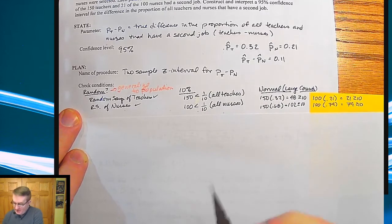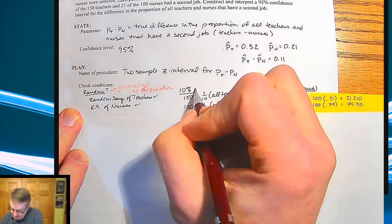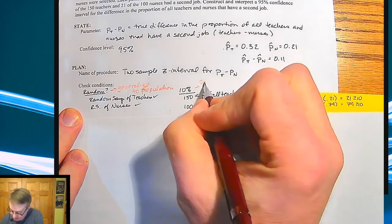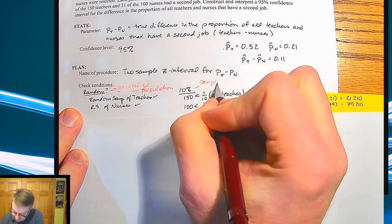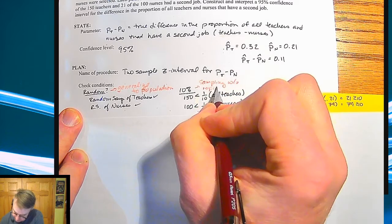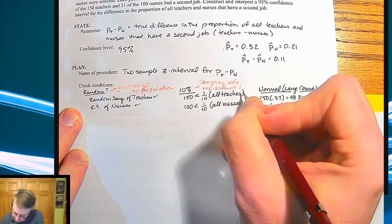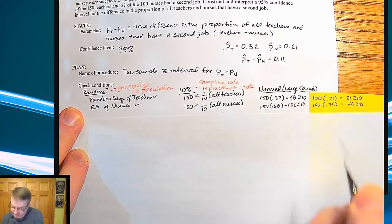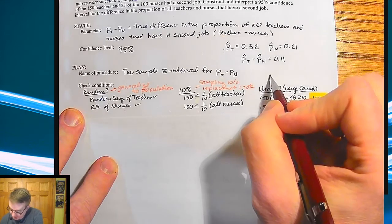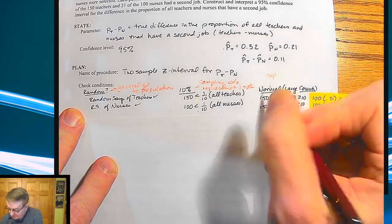What the 10% rule does is that means sampling without replacement is okay.